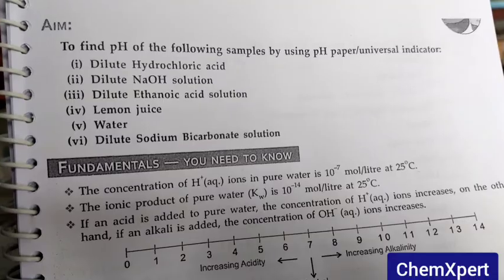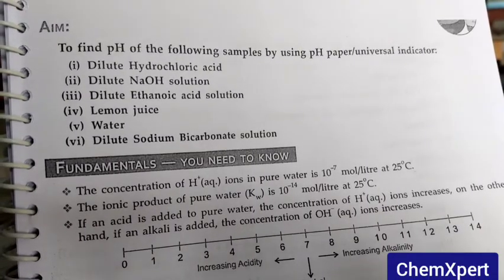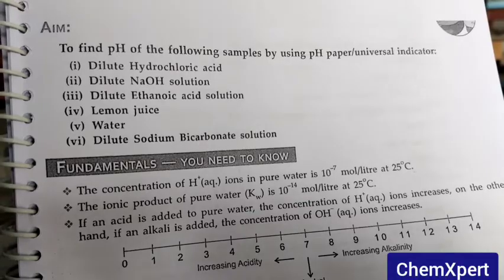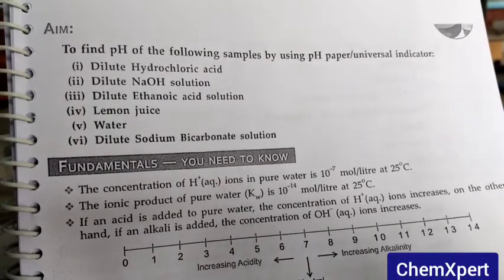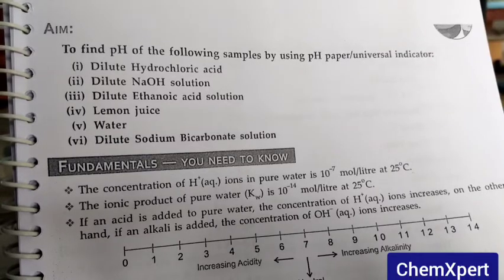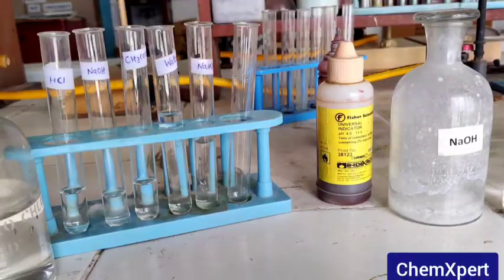In this video we are going to demonstrate the pH of following samples by using universal indicators. The samples are dilute HCl, dilute NaOH, dilute ethanoic acid, water, and dilute sodium bicarbonate solution.